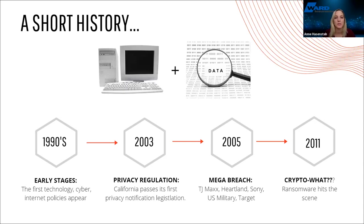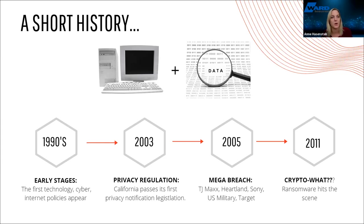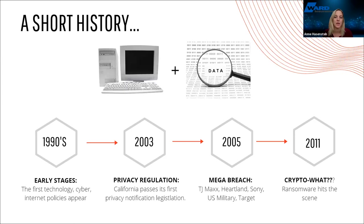What really moved the marketplace in a particular direction was the passage of notification law — privacy regulation. As you're now using technology and collecting and storing data, the first Privacy Notification Act passed in California in 2003, enacted in 2004. Fast forward years later, we've got all 50 states with privacy notification law and multiple pieces of legislation governing the responsibility of holding private information. From the insurance standpoint, corporate clients started coming to us saying they failed to protect private information, leading to regulatory claims, fines, and penalties.